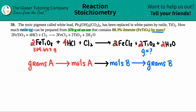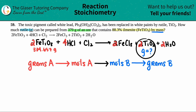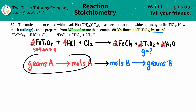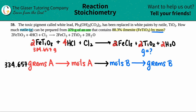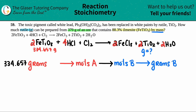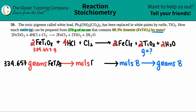Starting with 334.657 grams of FeTiO3, from there I can find the moles of FeTiO3, then go to the moles of TiO2, and finally get the grams of TiO2. Just a whole series of conversions, but like always, we start with what we're given: 334.657 grams of FeTiO3.